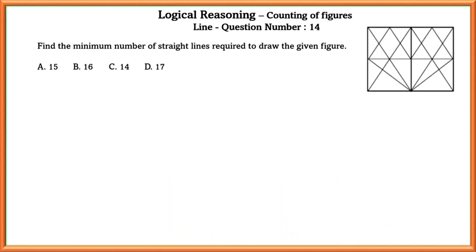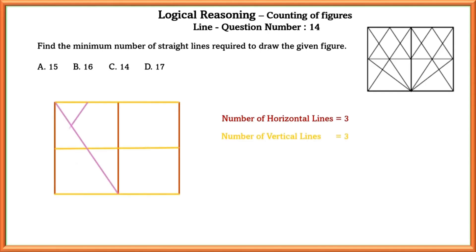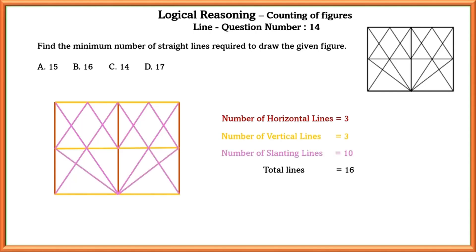Logical reasoning counting of figures — lines. Question number fourteen: find the maximum number of straight lines required to draw the given figure. The number of horizontal lines equals 3, vertical lines equals 3, and the number of slanting lines equals 10. So the total number of lines equals 16.